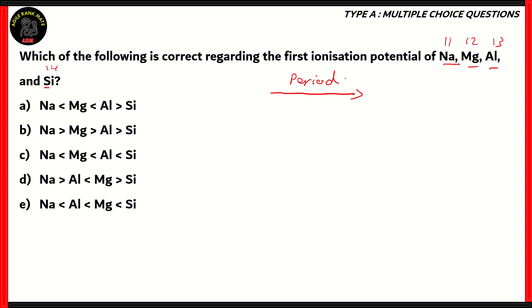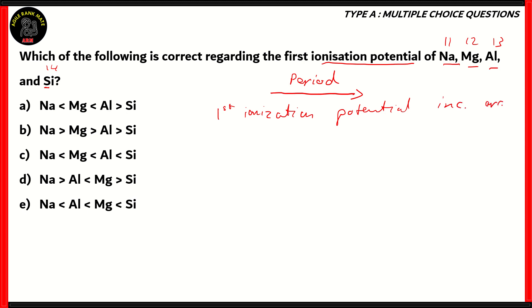We need to find out the ionization potential across a period. Now, across a period, you would have an increase in the number of protons in each of these elements. Sodium has 11 protons, magnesium has 12, aluminium has 13, silicon has 14. Because of that, the first ionization potential increases across the period.